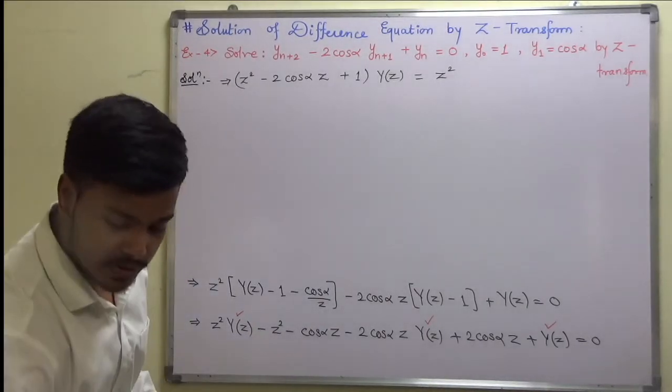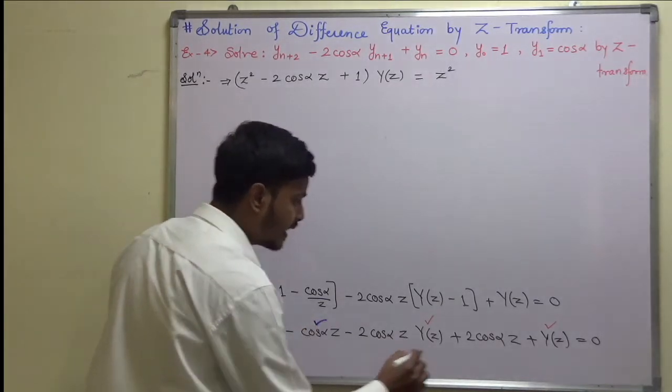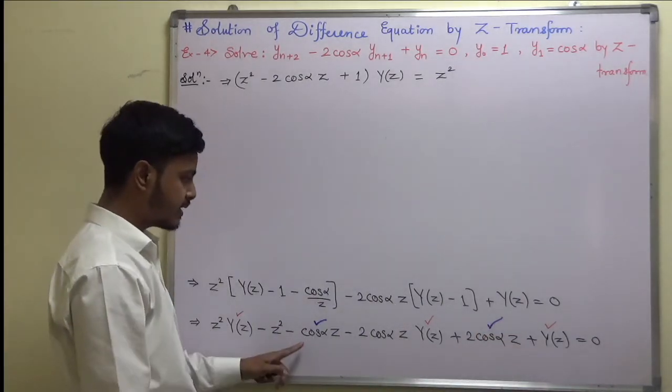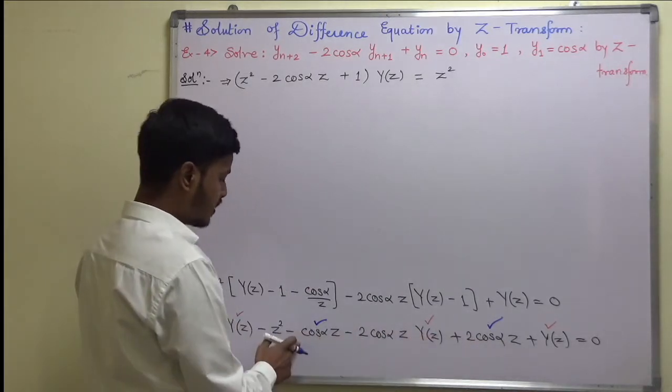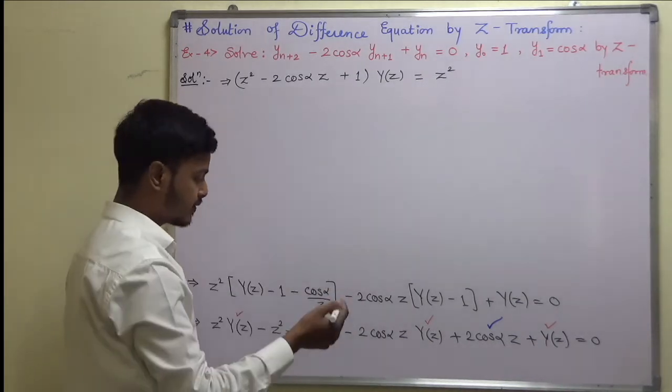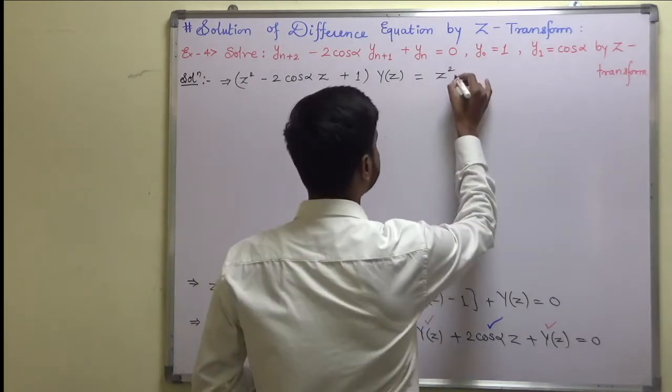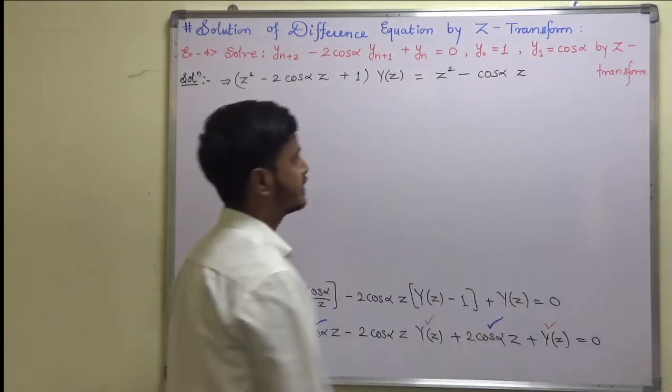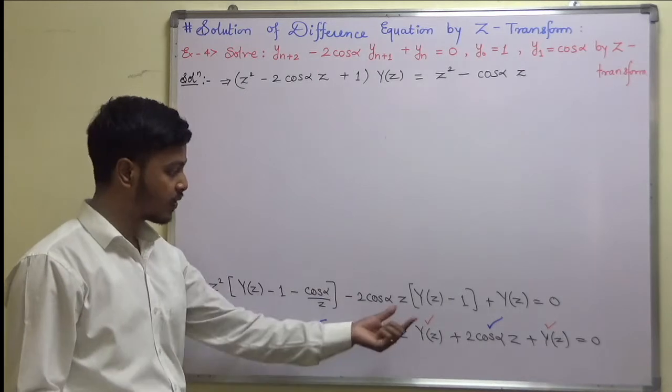Now look at these two terms. One is cos(alpha)z and the other is 2cos(alpha)z. So what is this? Cos(alpha)z plus 2 minus 1, so this is plus 1. When we take it to the left, it becomes minus of minus cos(alpha)z.